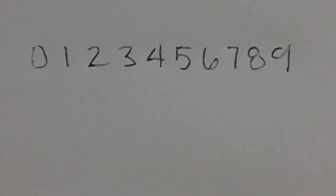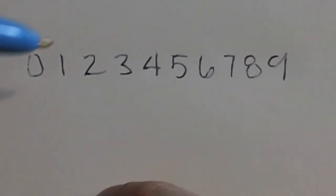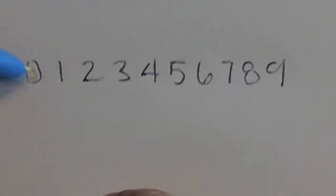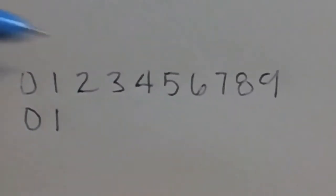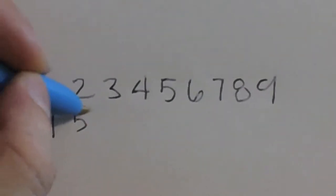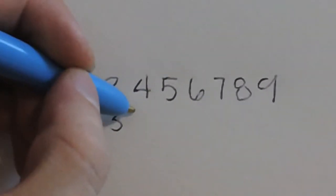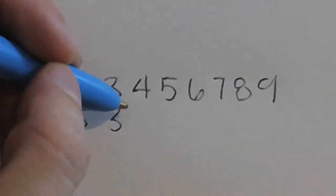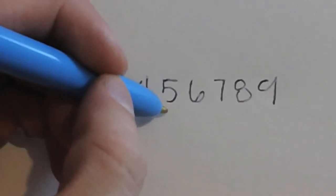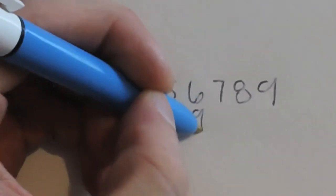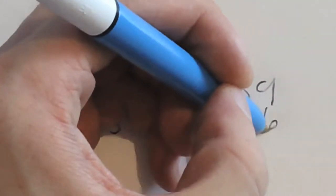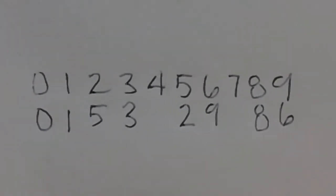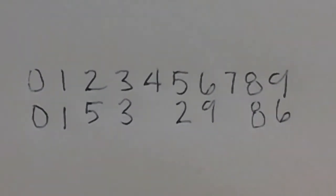Flipping numbers upside down — let's look at all the numbers. 0 flips and becomes the same number. 1 becomes the same. 2 becomes a 5. 3 is the same. 4 doesn't really become any other number. 5 becomes a 2. 6 becomes a 9. 7 doesn't really flip. 8 does. And 9 becomes a 6. So 4 and 7 are the only two numbers that don't flip.